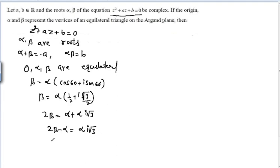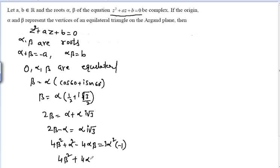Squaring both sides: (2β - α)² = -3α². Expanding: 4β² + α² - 4αβ = -3α². This simplifies to 4α² - 4αβ + 4β² = 0, or equivalently α² - αβ + β² = 0, which gives α² + β² = αβ.